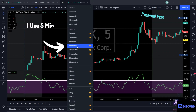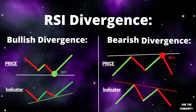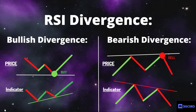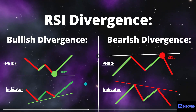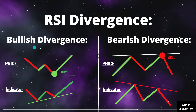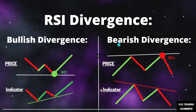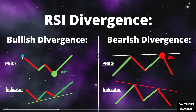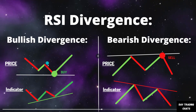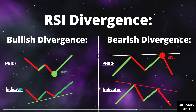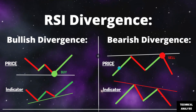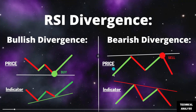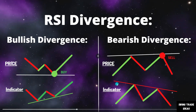I'm typically looking at a five-minute chart when determining if it's oversold or overbought. Now let's look at RSI divergence. On the left is bullish divergence and on the right is bearish divergence. The upper portion represents price action while the lower portion represents the RSI indicator — same for both sides.